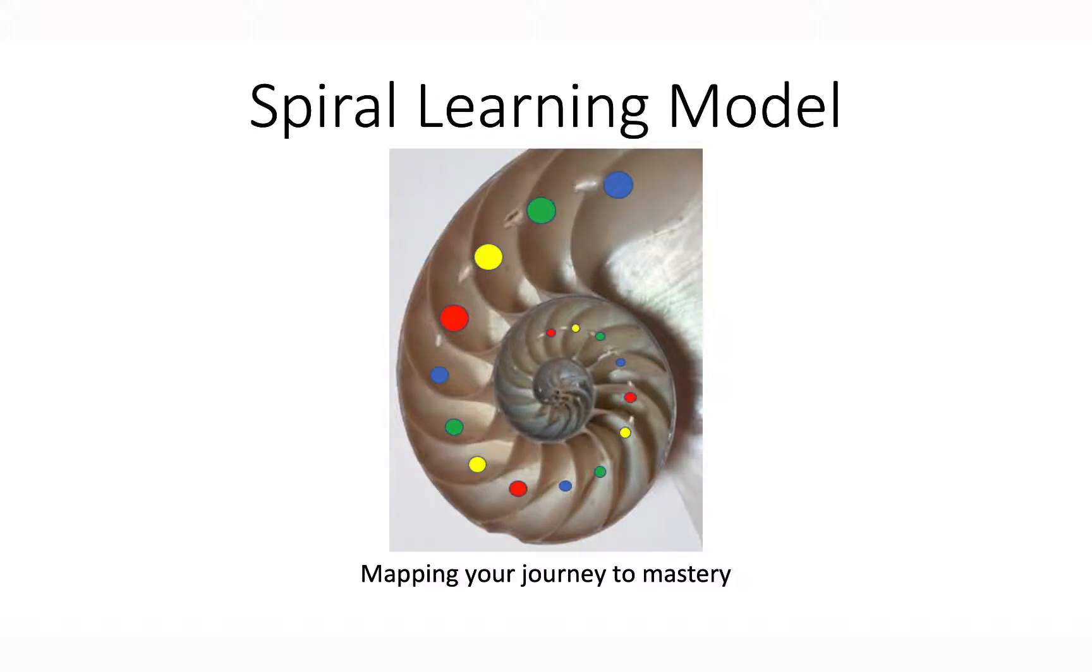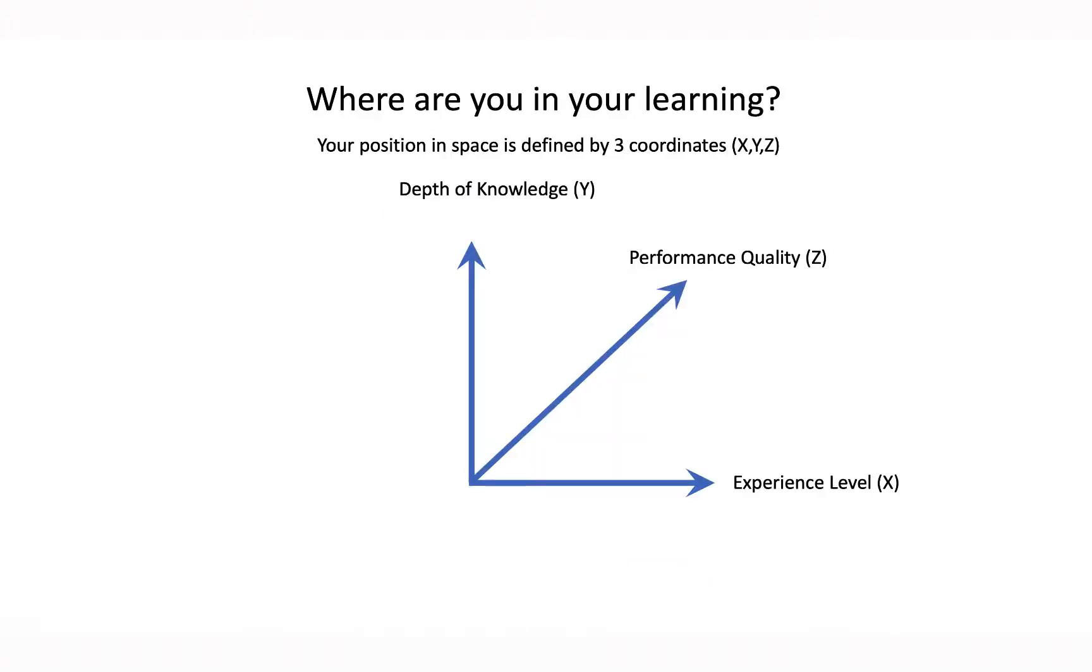Let's look at the spiral learning model and how we use it in NextReady to map your journey to mastery. Where you are in your learning can be defined by three coordinates: X, Y, and Z.